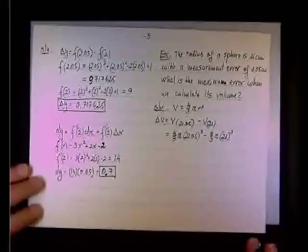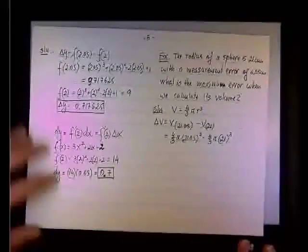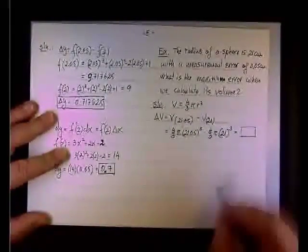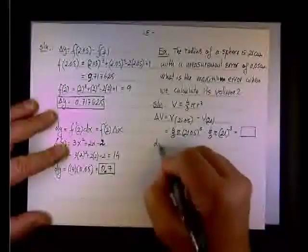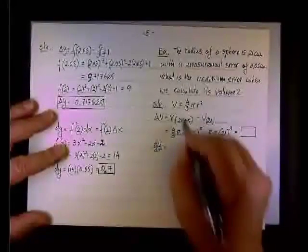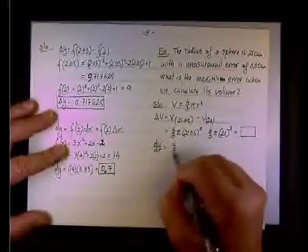We're going to say instead, let's calculate dv. Instead, so this is equal to something, but we can say that dv dr, if you take the derivative of a sphere, then it will be 4 over 3 pi r.